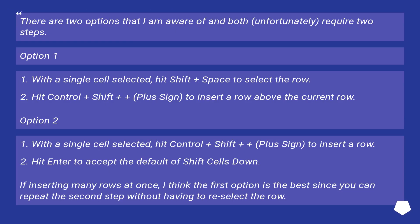There are two options, and both unfortunately require two steps. Option 1: With a single cell selected, hit Shift plus Space to select the row, then hit Ctrl plus Shift plus the plus sign to insert a row above the current row.